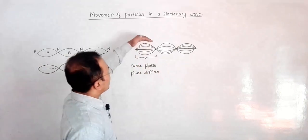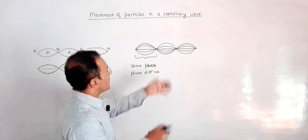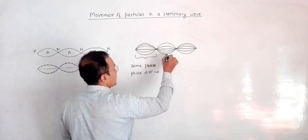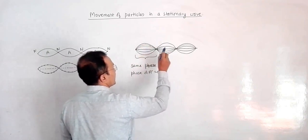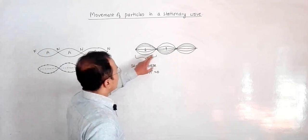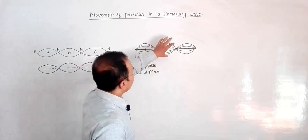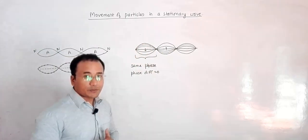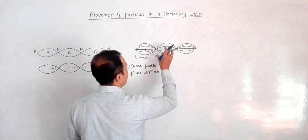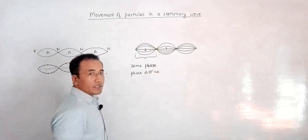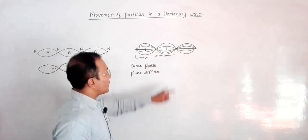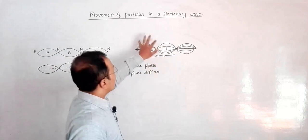Now, as stated, when the particles in one loop are like this, the particles in the adjacent loop will be just opposite. When one loop is at the top, the other is at the bottom of their motion. When one is in the middle going upward, the other is going downward. So that is why the particles of one loop are of opposite phase compared to the particles of the adjacent loop, while all particles within the same loop are of the same phase.